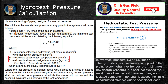For a design temperature above the test temperature, the minimum test pressure shall be calculated by the following equation: Pt = 1.5 × P × St / S, where Pt is the minimum calculated hydrostatic test pressure, P is the internal design pressure in kg/cm², St is the allowable stress at test temperature in kg/cm², and S is the allowable stress at design temperature in kg/cm².